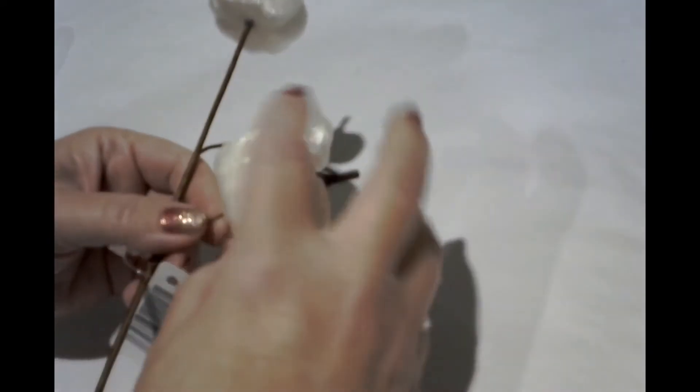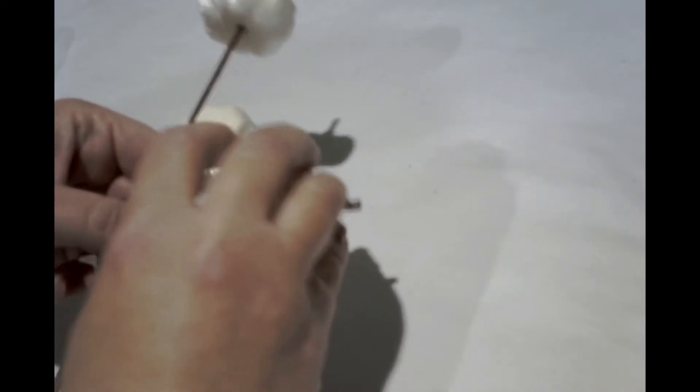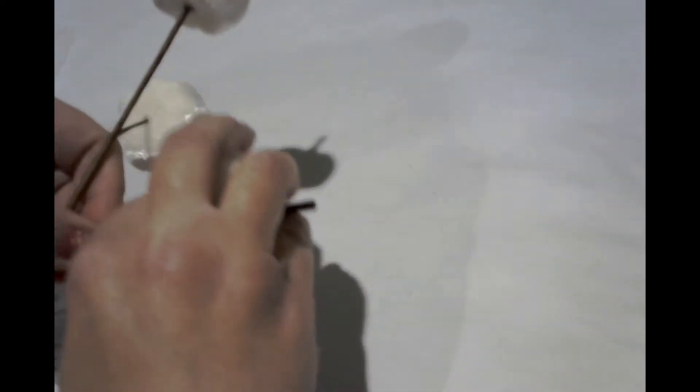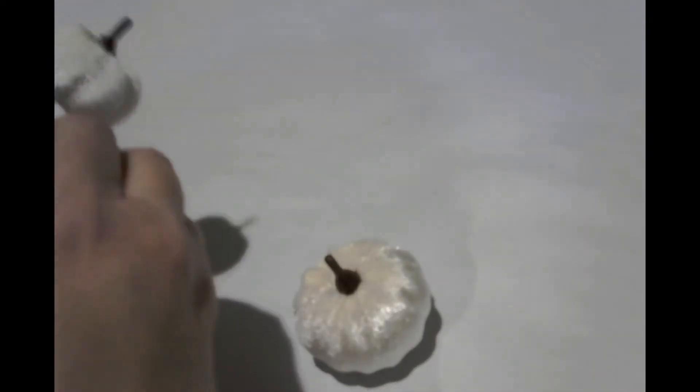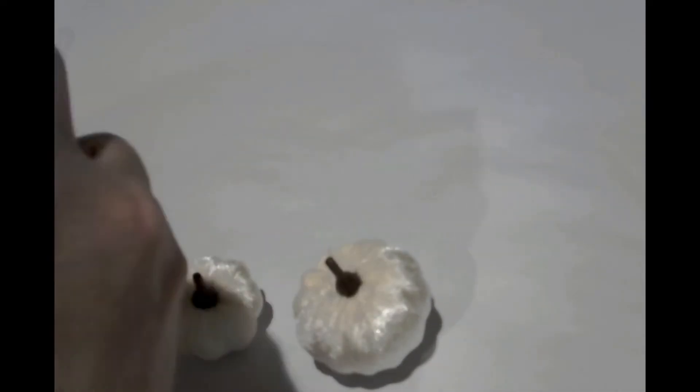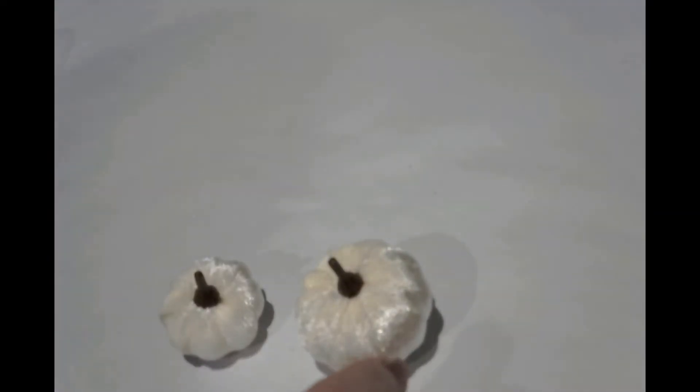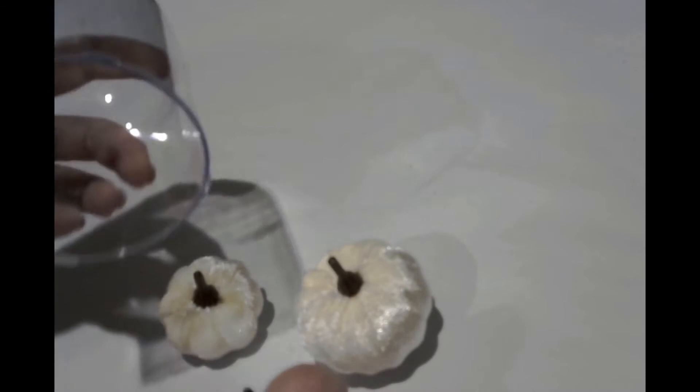So this one is super easy. You're just going to go ahead and pull the pumpkins off the picks. And then you're going to take your cloche and stuff your pumpkins inside. And then all I'm going to do is put it back on. And there you have it. Super easy and super fast.